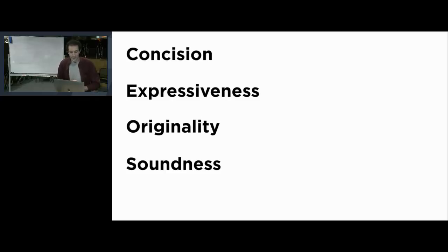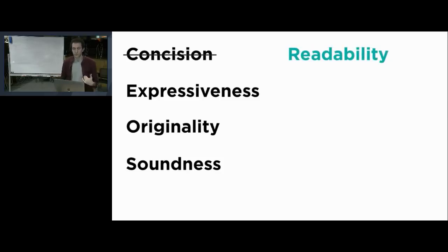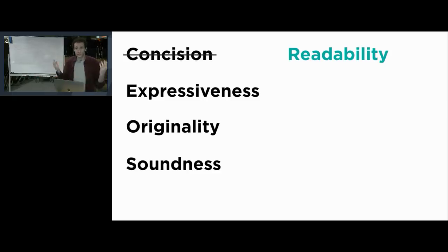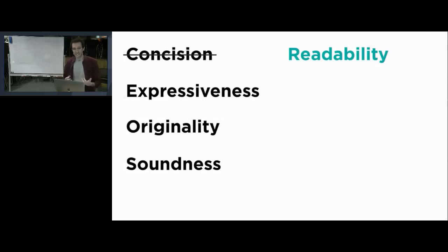Many people think that an important thing about Kotlin is that it's concise. Actually, this is not what we're looking for. What we really care about is not concision — not the fewest characters we can express some idea with — but readability. We want the code to be clear, because we read a lot more code than we write. A cluttered code base with a lot of boilerplate is not helping readability, so some degree of concision is needed, but our actual goal is readable code.